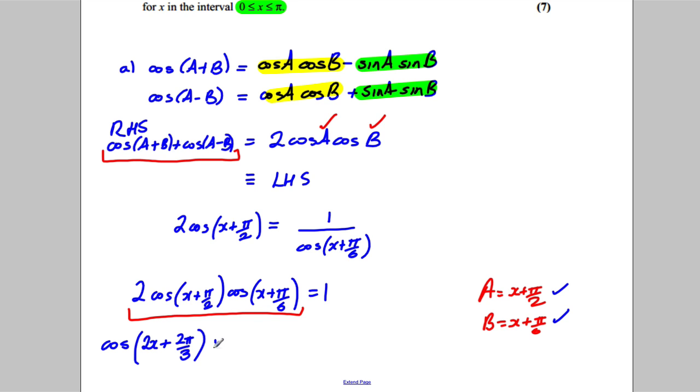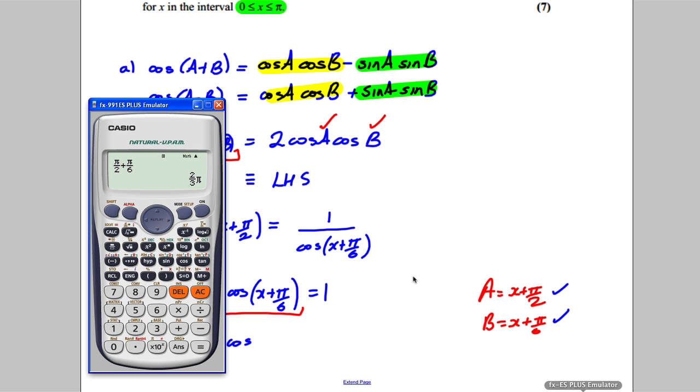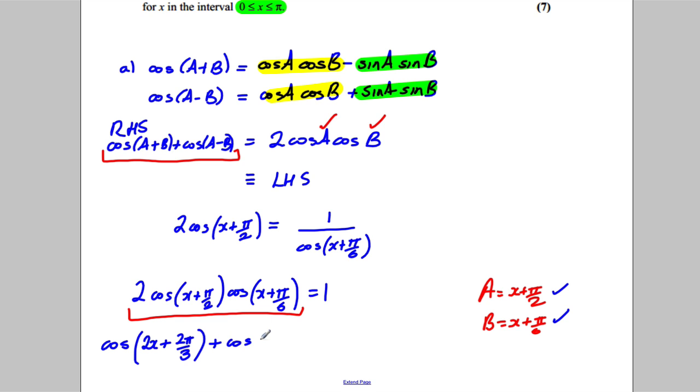And we would get plus cosine of these two things subtracted from each other. Now this subtract this would leave us with no X's, and pi by 2 take away pi by 6. Well you can just use your calculator again if you're not confident with your fractions, but it should be pretty easy. You get pi by 3. So